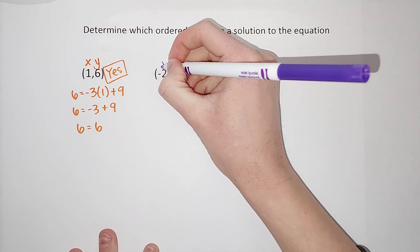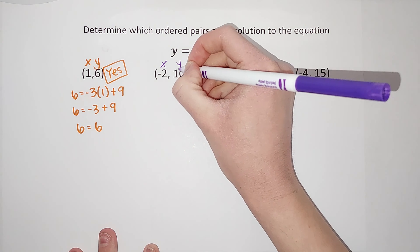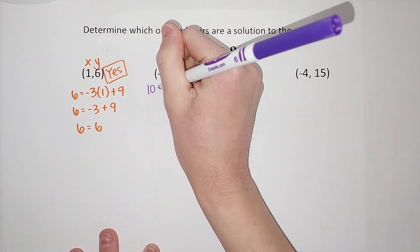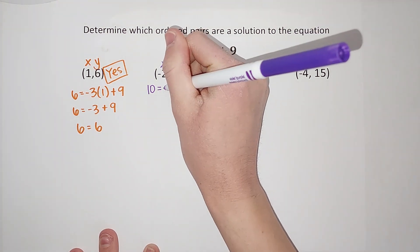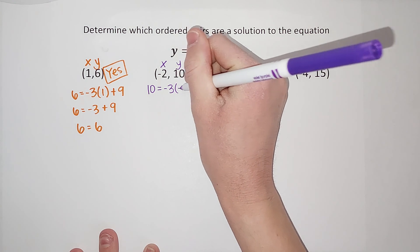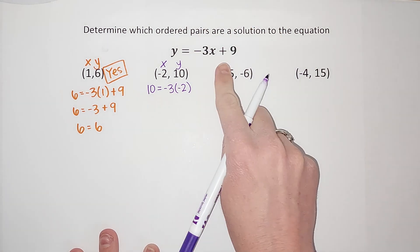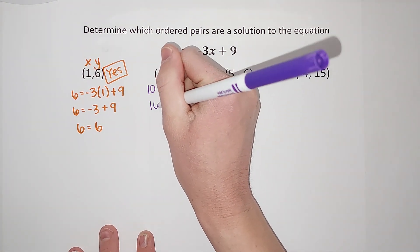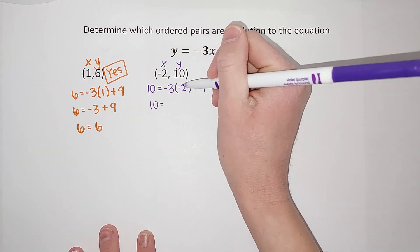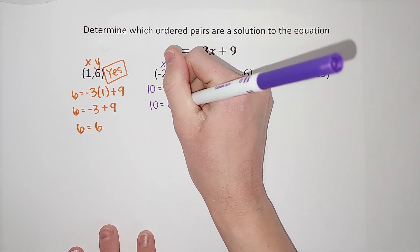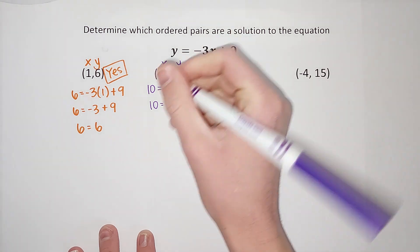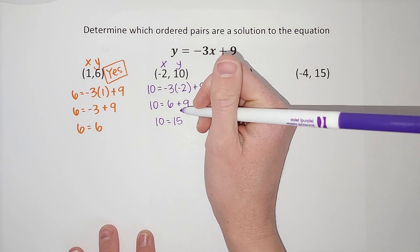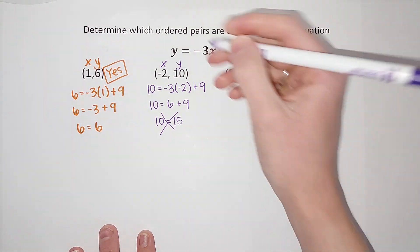Let's do the next one. The first number is my x, the second number is my y. So y equals — 10 equals negative three times x, and we're seeing if x can be negative two, plus nine. A negative times a negative gives me a positive, three times two gives me six, so six plus nine...